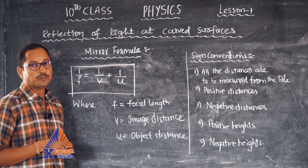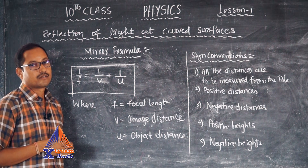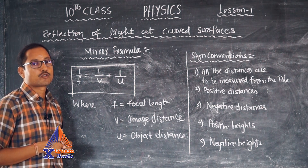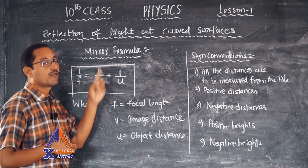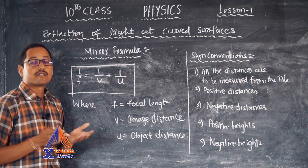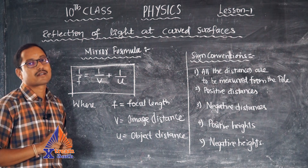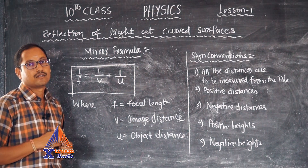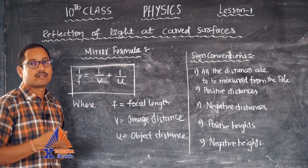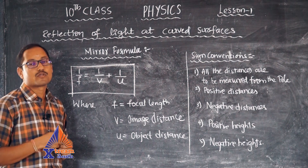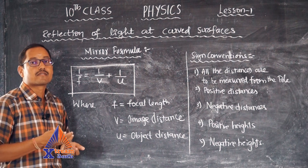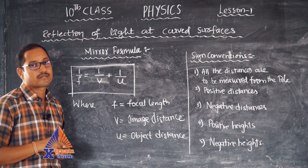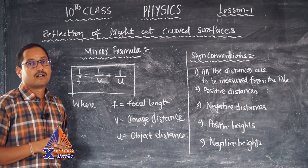Hello students, welcome to Extreme Telugu. In this video we are discussing 10th class physics lesson number one: reflection of light at curved surfaces. Today we are focusing on a topic called the mirror formula and its sign conventions. This is a very important topic for 10th class examinations. The mirror formula gives us an idea about how we can calculate focal length when object distance and image distance are known, or calculate image distance when focal length and object distance are known, or calculate object distance when focal length and image distance are known.